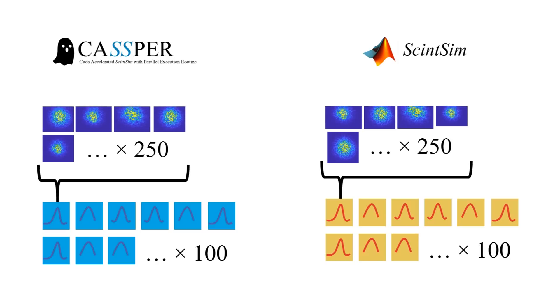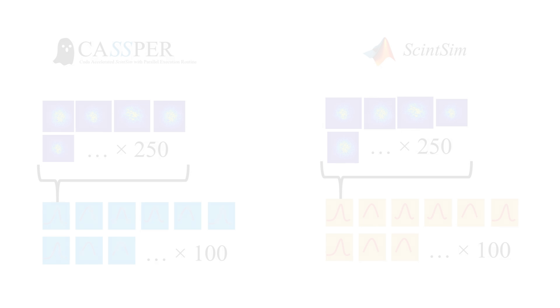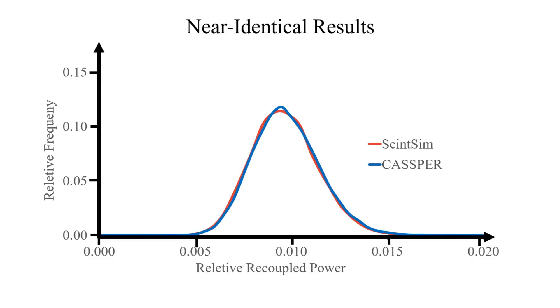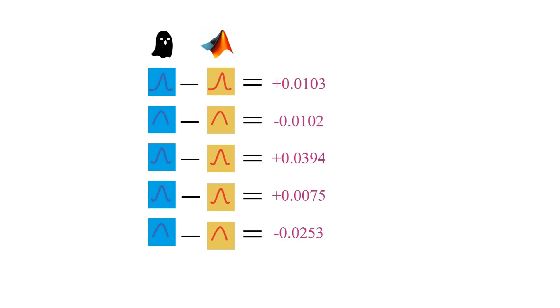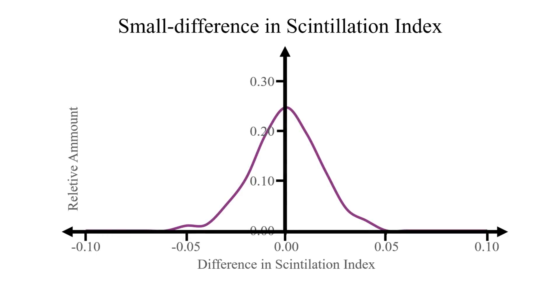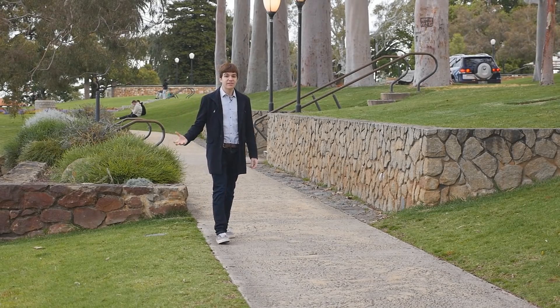With each of the individual functions working correctly, it was time to bring them together into one cohesive program. I then tested it, running 500,000 simulations — 100 blocks of 250 simulations each, for each of the two programs. In this graph, we have the results of all 5,000 simulations comparing the relative recoupled power with how often that value was received. As you can see, they have almost identical results with very similar means and standard deviations. I then compared the difference in scintillation index between each block of 250 SintSim and CASPer simulations, comparing block 1 SintSim with block 1 CASPer and so on. An equivalence test showed that the two populations were identical to within the 0.05 significance limit.